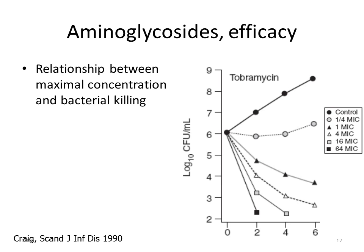Here you see the relationship between the concentration of an aminoglycoside and bacterial killing in an infected animal. The filled circles are control animals; the other circles represent a maximum concentration of a quarter of the MIC (light circles), then triangles at once the MIC and four times the MIC, and squares at 16 times and 64 times the MIC. With increasing concentration, the efficacy of the drug also increases.